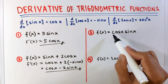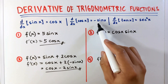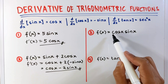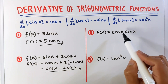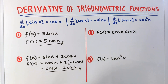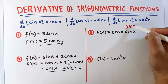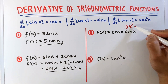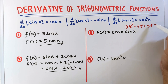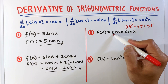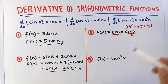For number 3, we have f of x equals cosine x times sin x. Take note that we cannot apply the formulas directly — we cannot simply get the derivative of cosine x and multiply it by the derivative of sin x. Since this is in product form, we need to use the product rule. The derivative of a product of f and g is equal to f times the derivative of g, plus g times the derivative of f. In this example, f is cosine x and g is sin x, and we simply need to follow that formula.